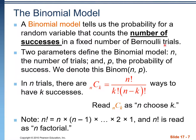Binomial trials still have to meet those three Bernoulli criteria. In a binomial model, we have two parameters: the number of trials and the probability of success — similar to how we define a normal model with mean and standard deviation.